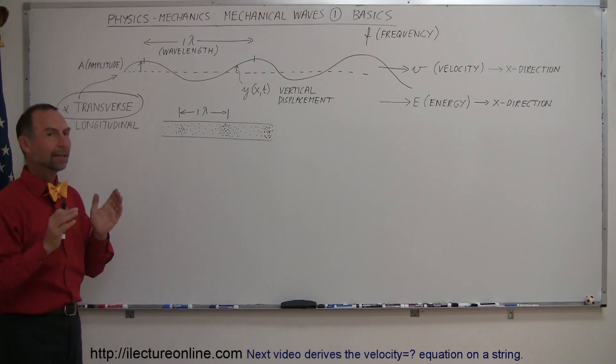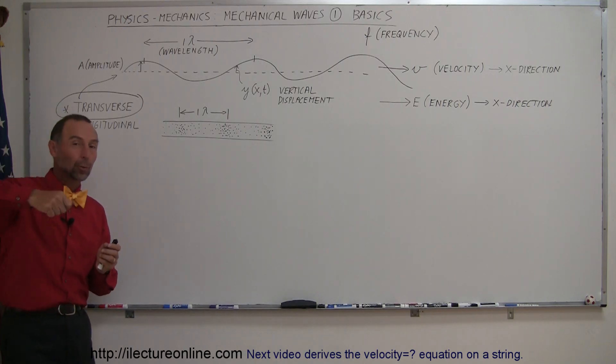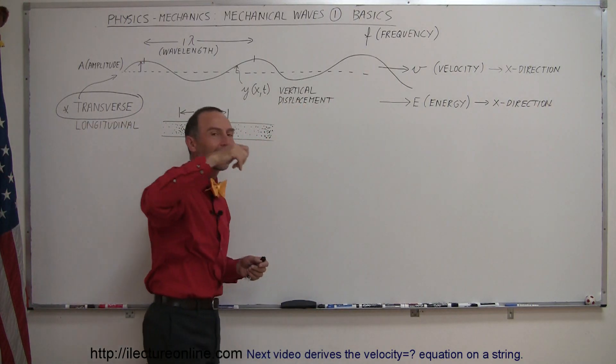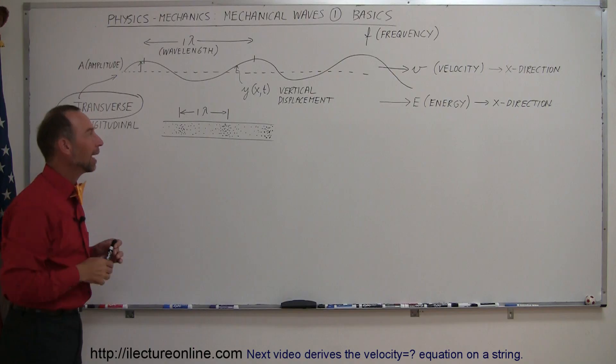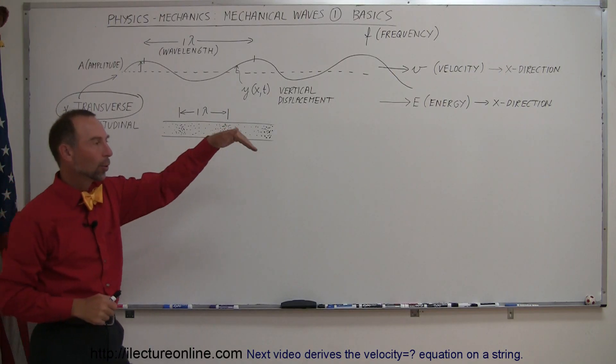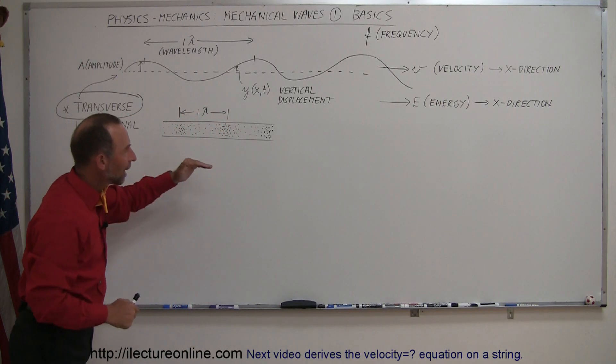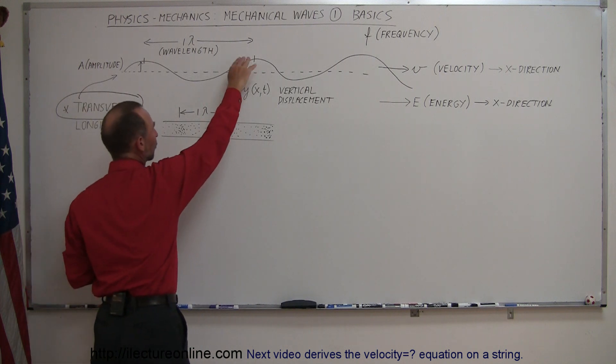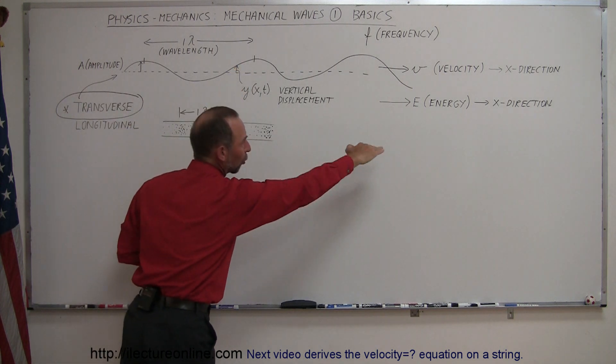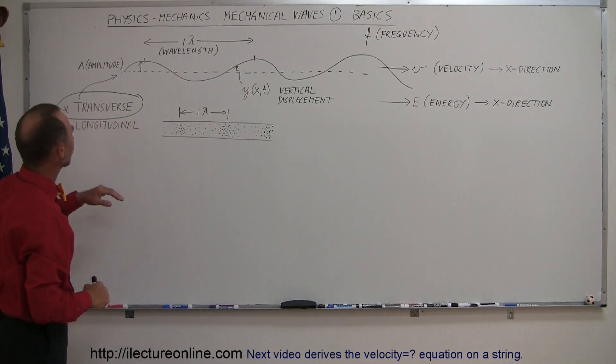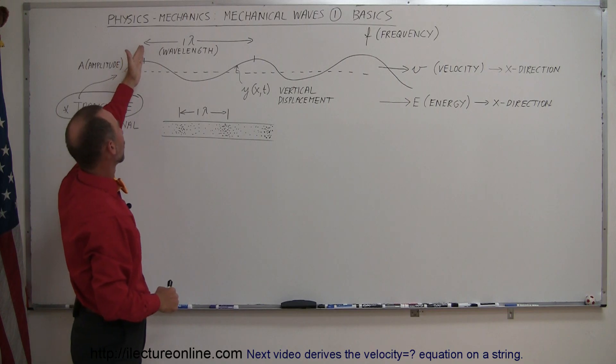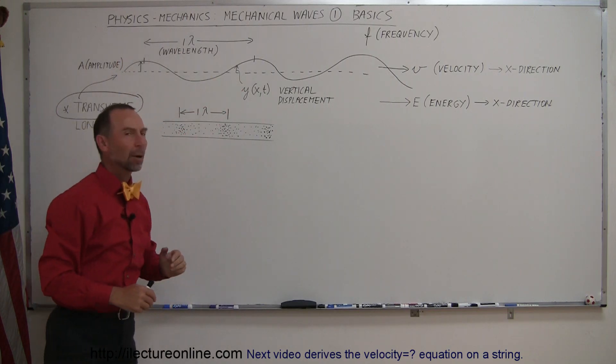Alright, so again, basics is that when you take a string and you wiggle up and down at a particular frequency, frequency is the indication of how many times per second you bring the string up and down, that energy will then go along the string particles as a wave carrying the energy and carrying the wave away from the source of the energy. The displacement is vertical on the wave particles, the motion is horizontal in the x direction, the amplitude is the maximum displacement of the wave, the wavelength is the distance from one peak to another peak.